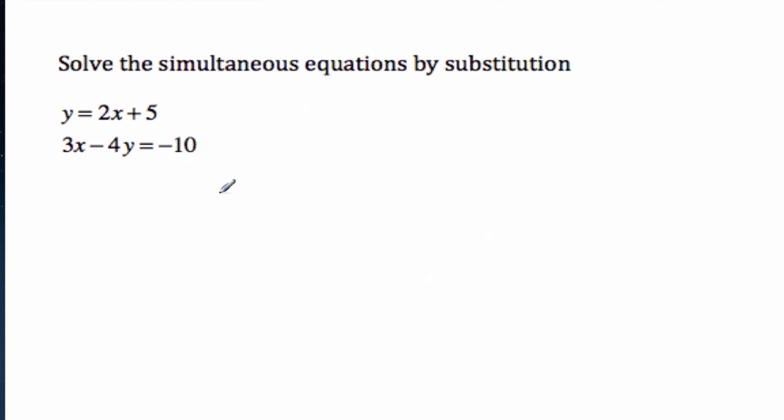Well, we can see that the top one is in the form y equals, and the bottom one is a little bit more messy, busy. So what you can do is you can take 2x plus 5. That's y. And you can put it in instead of y. So you make the substitution of 2x plus 5 into where the y was.